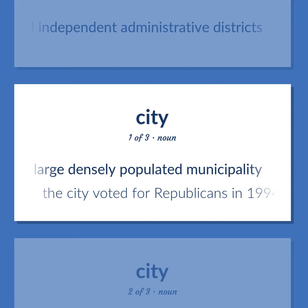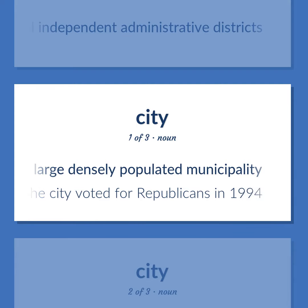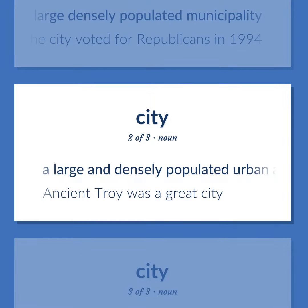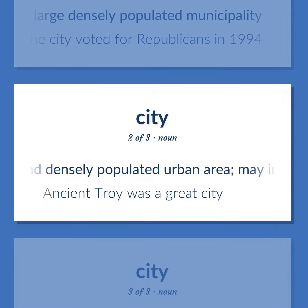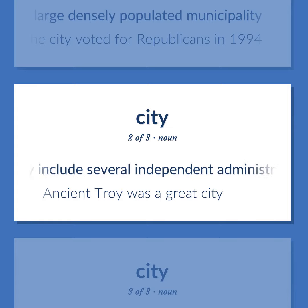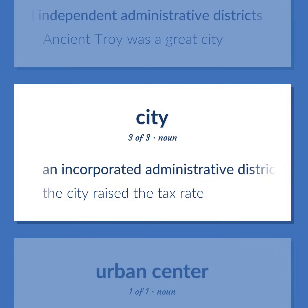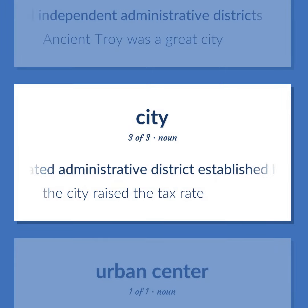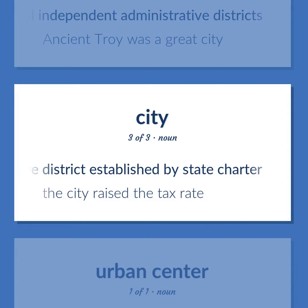Example sentences: The city voted for Republicans in 1994. Ancient Troy was a great city. An incorporated administrative district established by state charter. The city raised the tax rate.